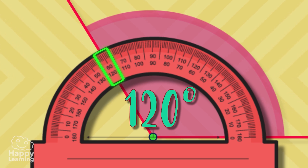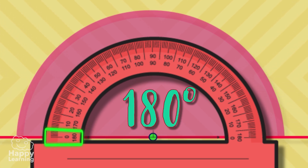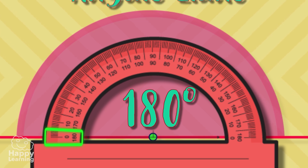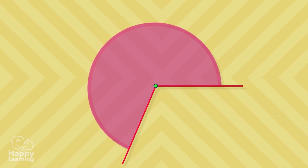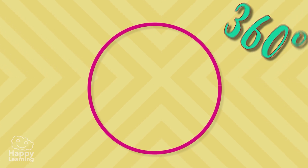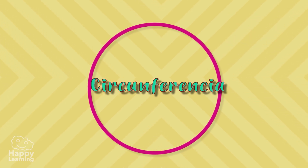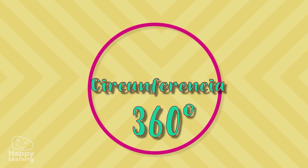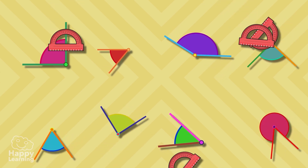Now let's check this other angle — it measures 120 degrees. It's an obtuse angle because it measures more than 90 degrees. Imagine that instead of 120 degrees it measures 180 — that is called a straight angle. And if it measures 360 degrees, that's a complete or full angle. A circumference measures 360 degrees!